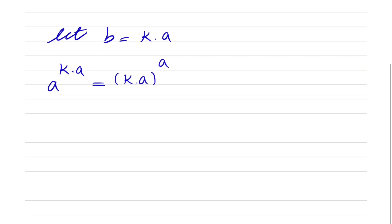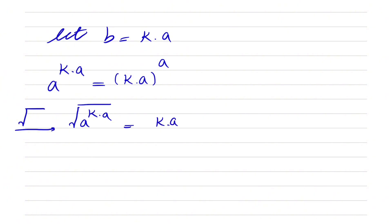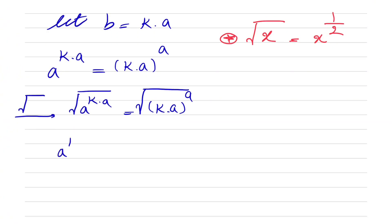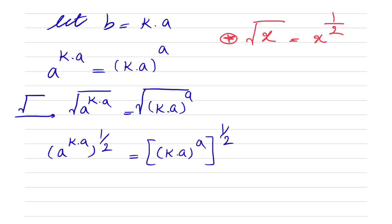Here we're going to take the square root on each side. What we get on the left side is a to the power of k times a, equal to k times a to the power of a, under the square root. We know that the square root of x is equal to x to the power of 1 over 2. So on the left side we have a to the power of ka, all to the power of 1 over 2, equal to k times a to the power of a, all to the power of 1 over 2.